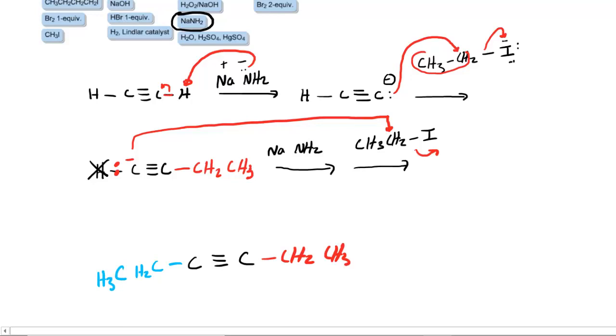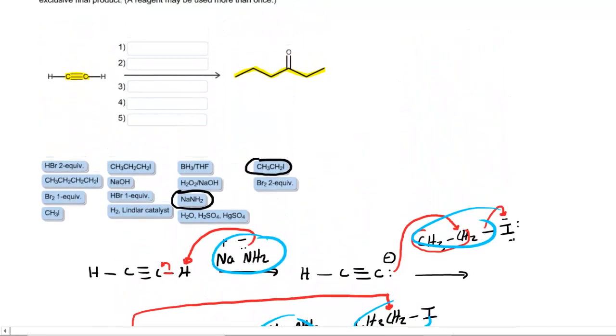After four steps - one, two, three, four - we have achieved a six carbon molecule. So that's really good, we're getting there. But of course, we need to create a ketone. We have to somehow introduce a double bond to oxygen within the molecule and also lose the triple bond.